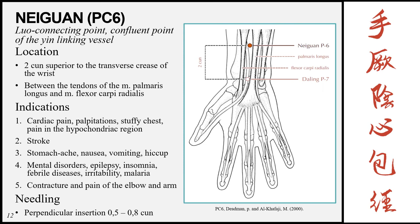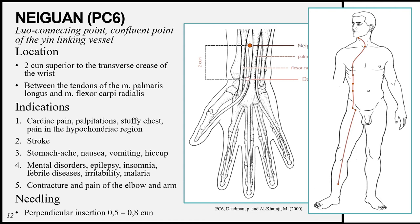The next point is Nei Guan, pericardium 6. This is the Luo-connecting point of the pericardium meridian, but it is also the confluent point of the yin linking vessel. The yin linking vessel is one of the extraordinary meridians, meaning this point can treat conditions of the pericardium meridian but also along the yin linking vessel — including conditions of the chest, lungs, and throat region.